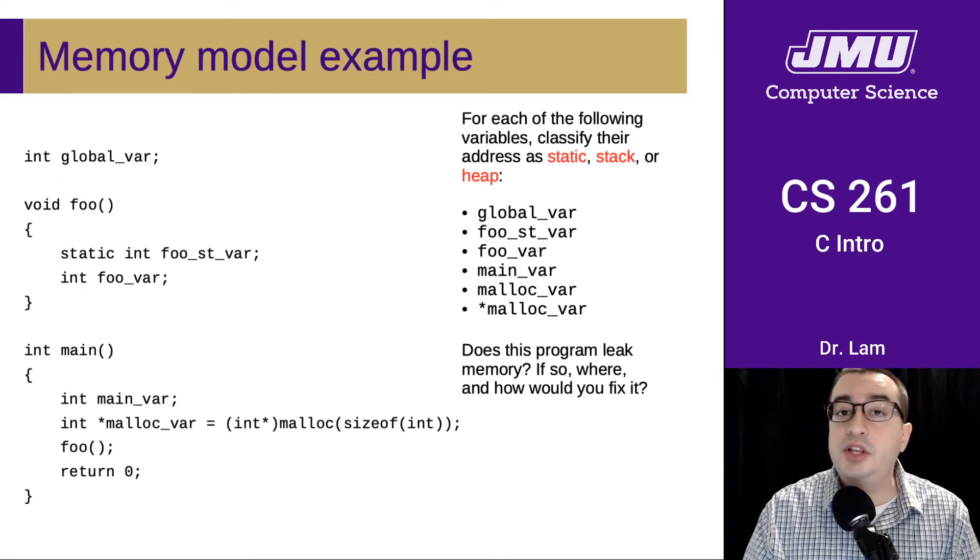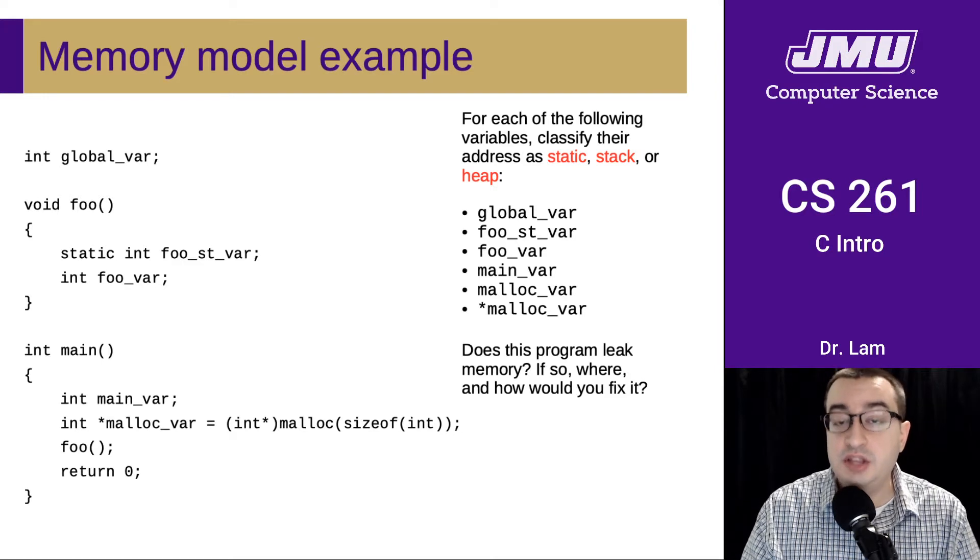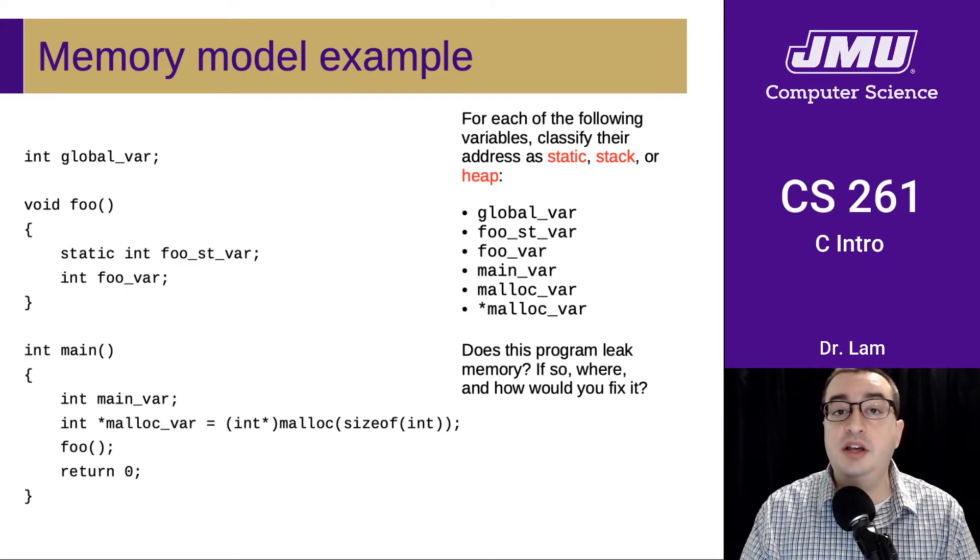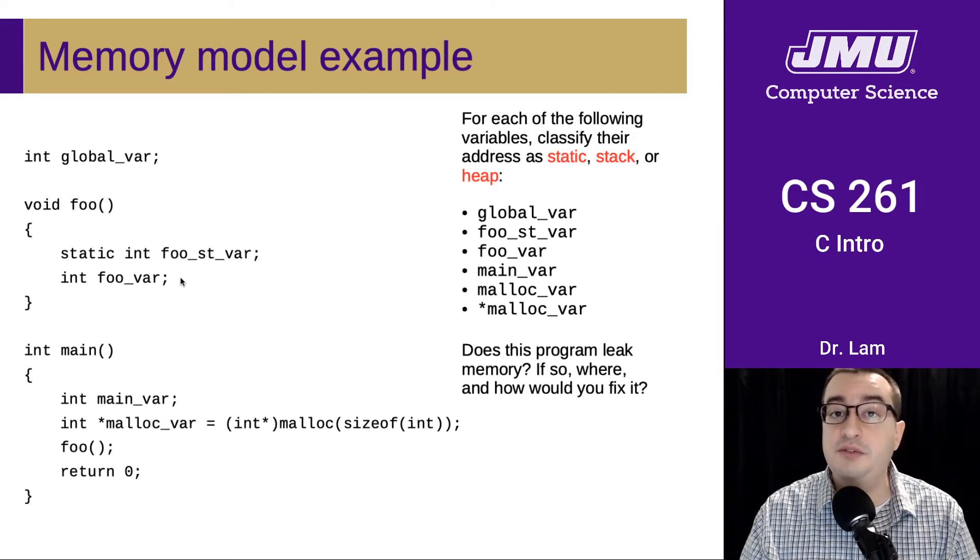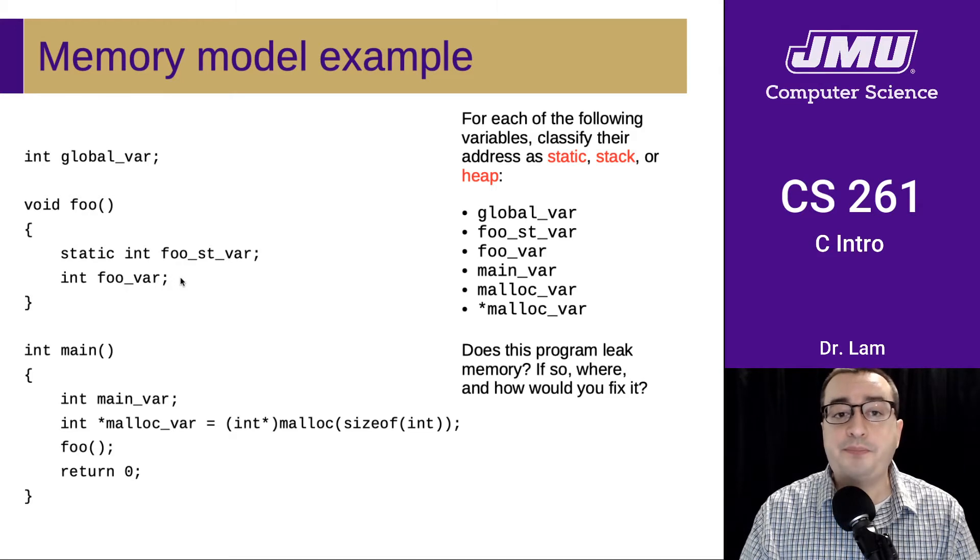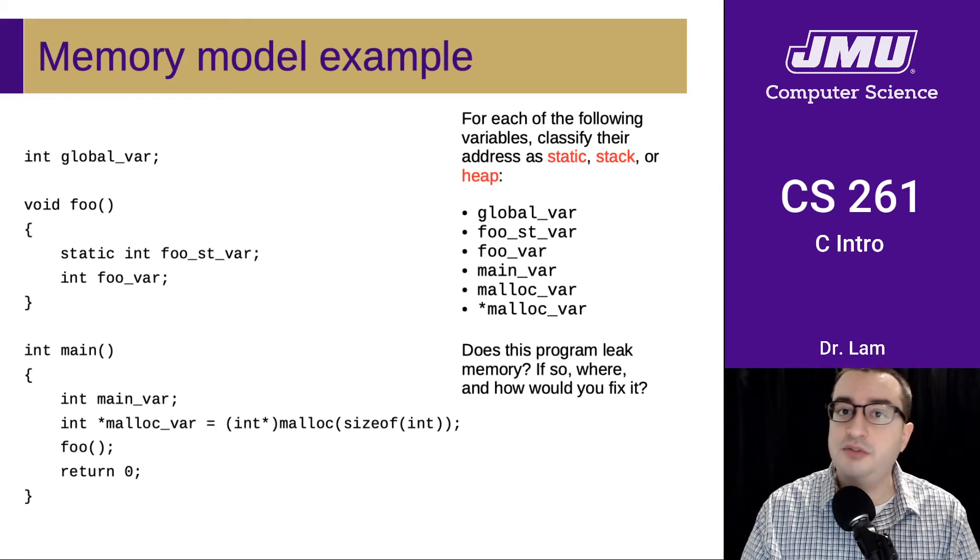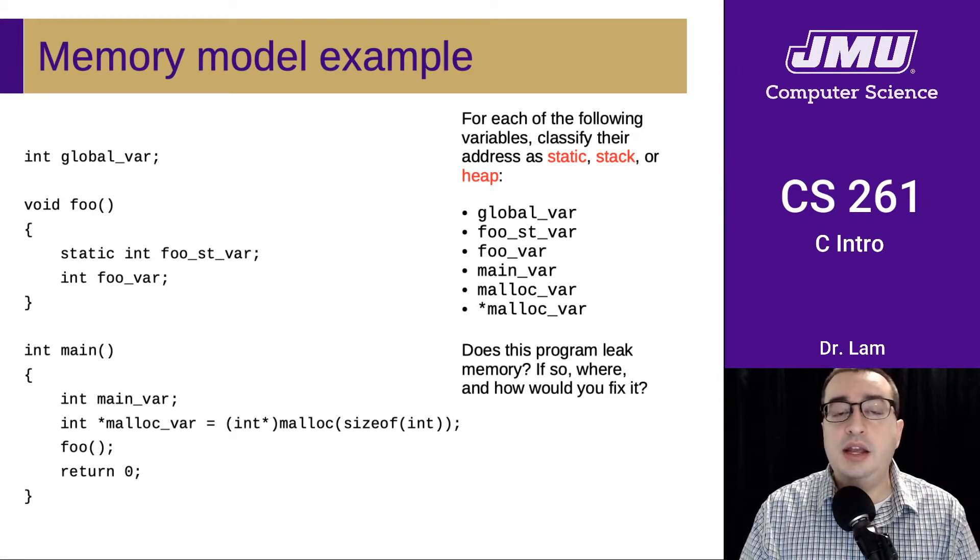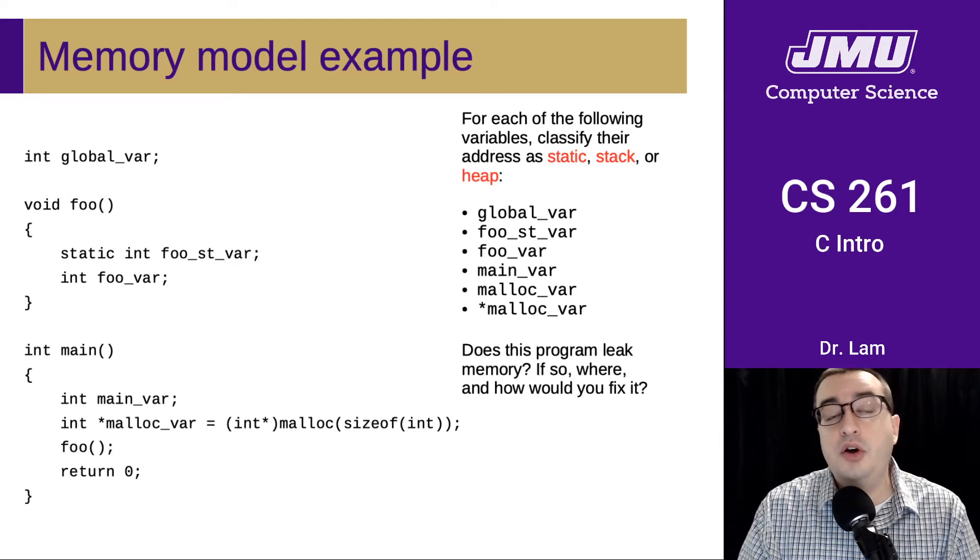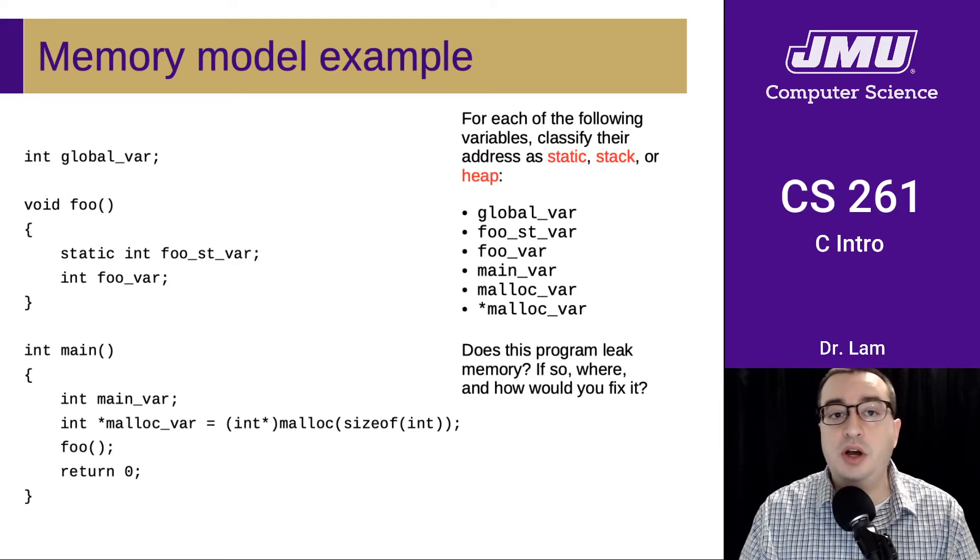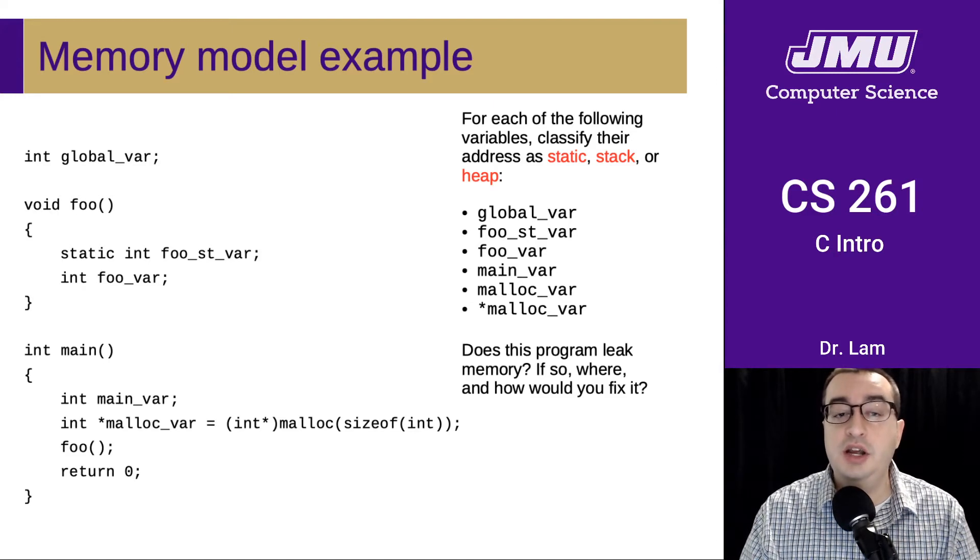They are, however, going to have different addresses, different locations, and they're going to have different lifetimes. So the regular local variable foo_var is going to be located on the stack inside of the region of memory allocated for foo every time it's run. And there may be multiple copies of foo_var if foo calls itself recursively, right? And its lifetime is going to be as long as foo is running. So for each copy of foo, there's going to be one foo_var that is going to be allocated on the stack while that copy of foo is running.